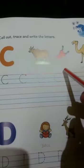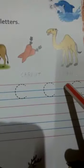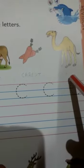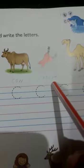Cow spelling is C-O-W, cow. Carrot spelling is C-A-R-R-O-T, carrot. And camel spelling is C-A-M-E-L, camel. Cow manne gai, carrot manne gajar, camel manne otto.